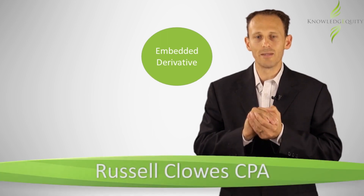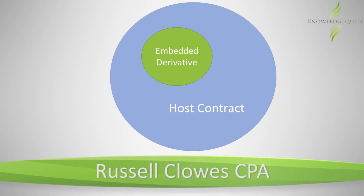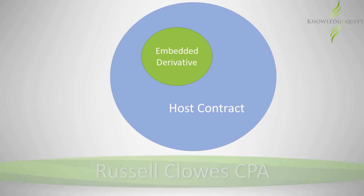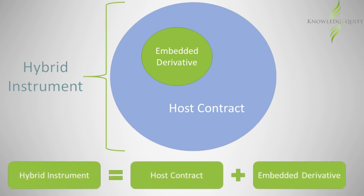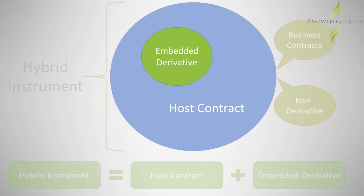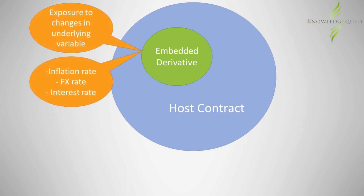An embedded derivative is simply a derivative that is included within a non-derivative host contract. We use the term hybrid instrument to refer to the combination of the host contract and the embedded derivative. The host contract refers to business contracts for things such as the sale or purchase of goods. The embedded derivative is the aspect or part of a host contract that presents an exposure to changes in an underlying variable, such as the inflation rate or a foreign exchange rate.